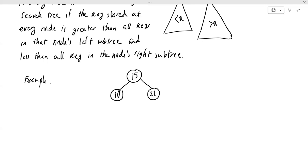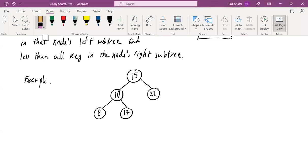For node 10, the same property must hold — not just the immediate child but everything in its subtrees. On the left I must have something less than 10, so maybe 8. And on the right, I must have something greater than 10 but less than 15. If I put 17 there, this is not a binary search tree because 17 is in the left subtree of 15 but is not less than 15. So something greater than 10 and less than 15 — for example 14 — would work.